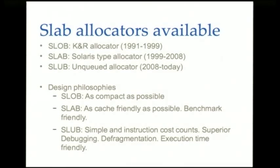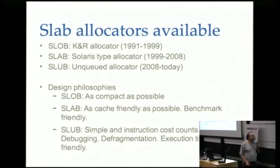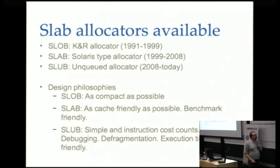A bit of history on why these three allocators exist. Initially in 1991, Linus used the Kernighan and Ritchie allocator from the book — a very compact allocator. That lasted from 1991 to 1999, when Manfred Spraul and colleagues read Bonwick's paper about the slab allocator for Solaris and used it as a guide to create the Linux slab allocator. In 2004, the speaker began extending it with NUMA support, but it became complex, leading to the creation of slub — called the 'unqueue allocator.'